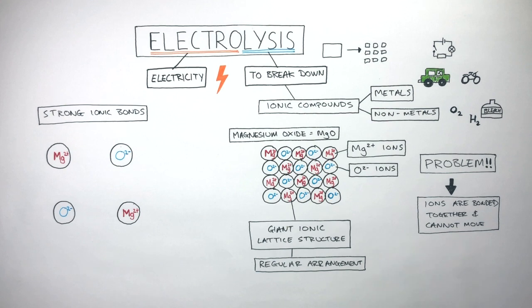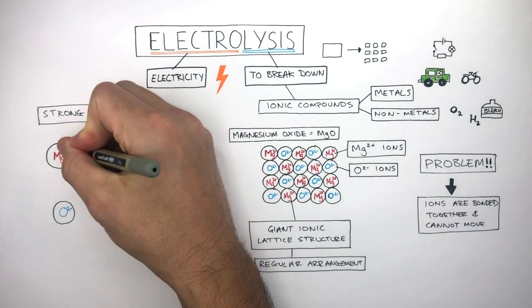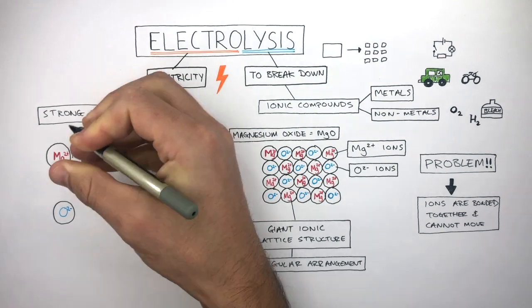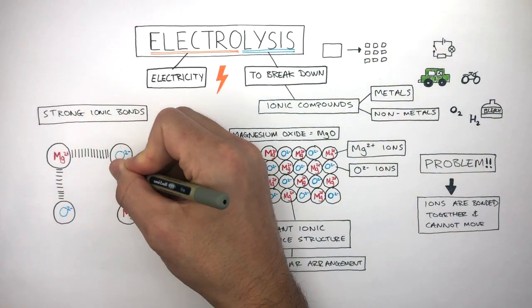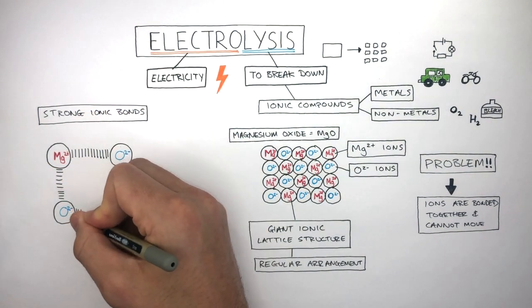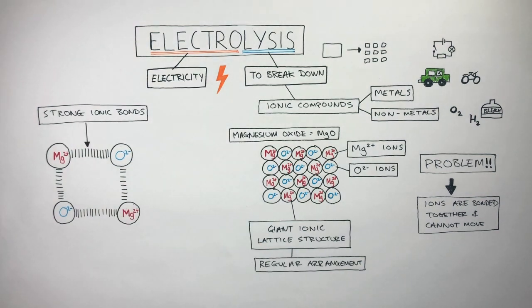Here are four ions, Mg2+ and O2-. These dashed lines represent the strong electrostatic forces of attraction between the oppositely charged ions, which keep them in place. For electrolysis to work, these ionic bonds must be broken so the ions are free to move. We're now going to go through two ways of achieving this.